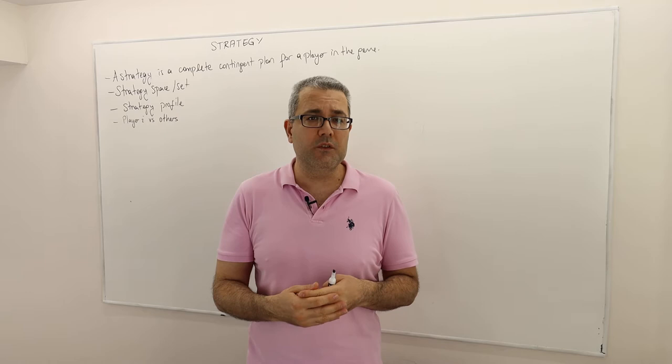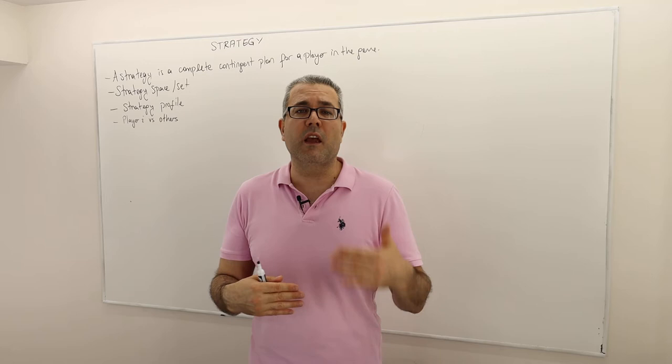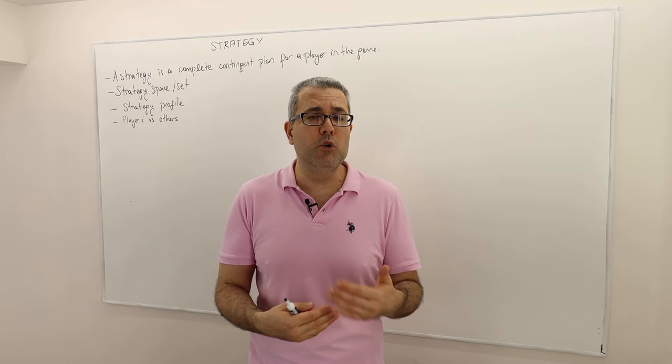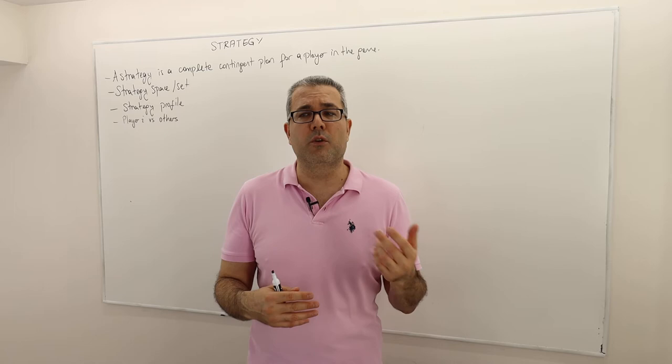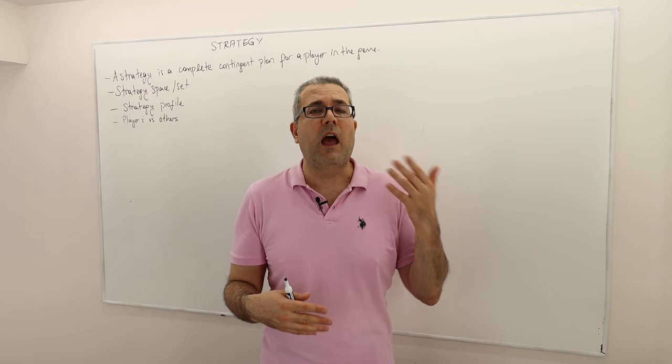Chess is also an extensive form game. The players, there are two players, and then the moves, the actions, and then the rules like what a player can do, how he can play or she can play after certain moves are clear, and then the outcomes are clear. You either win or the outcome can be either one guy wins, the other loses, or there's a tie.